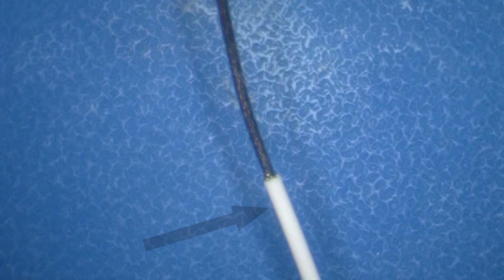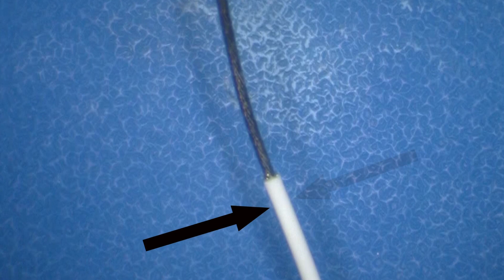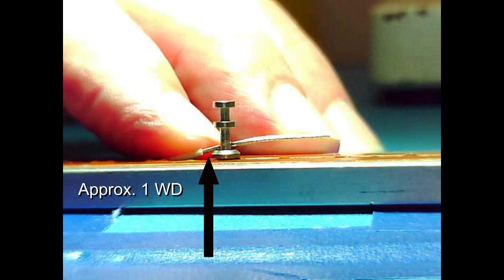A wire diameter is defined as the diameter of the wire conductor and the outer diameter of the insulation. Place the wire in contact with the terminal, leaving approximately one wire diameter from the insulation cut end to the point where the soldered connection will begin.